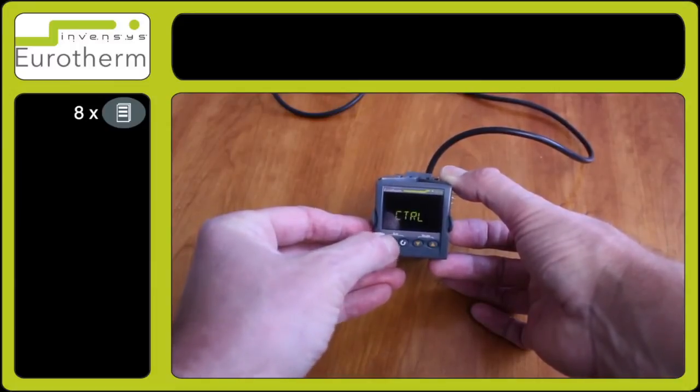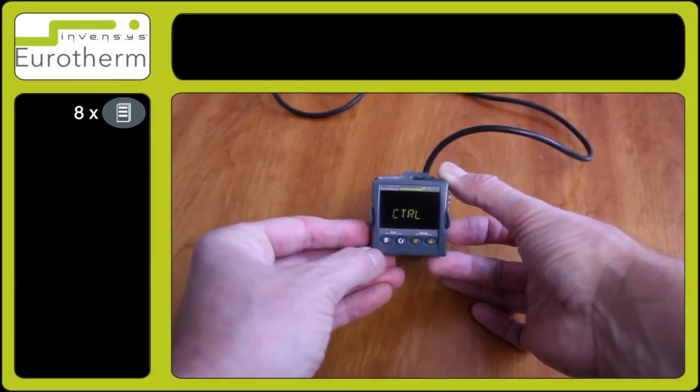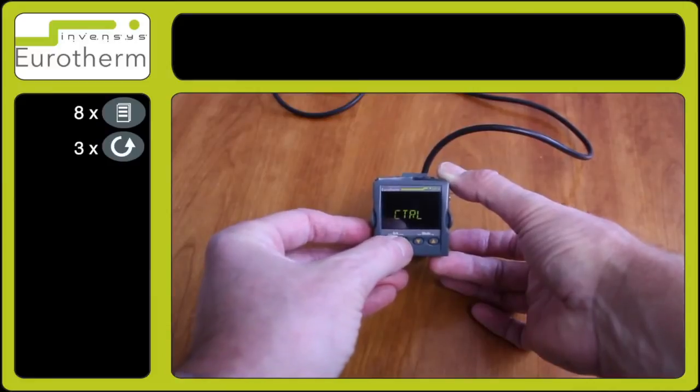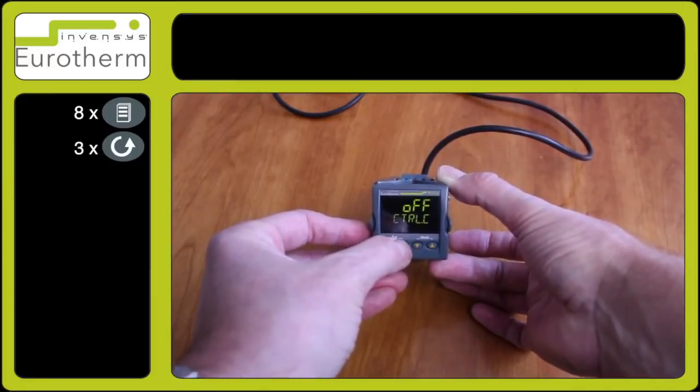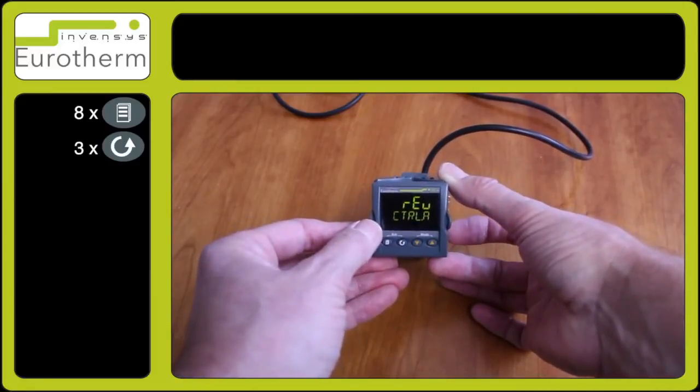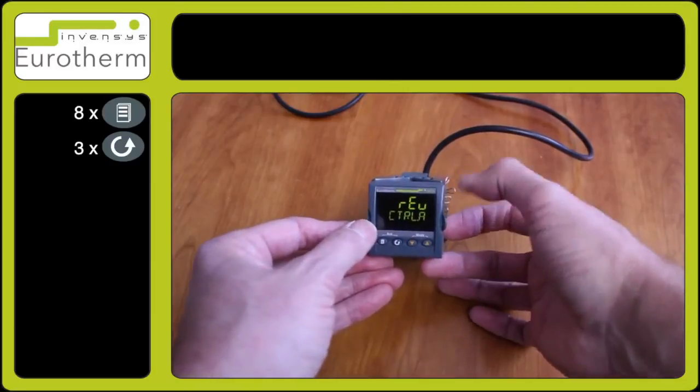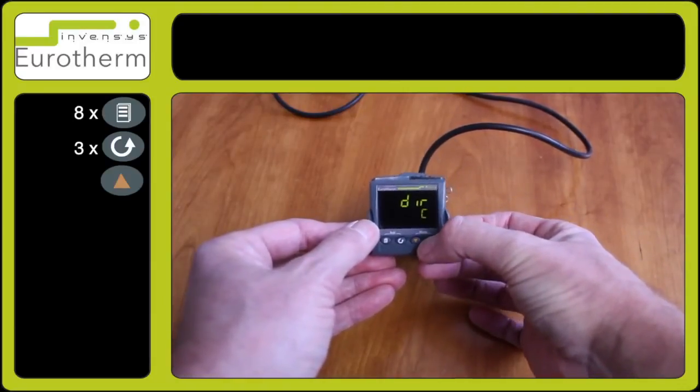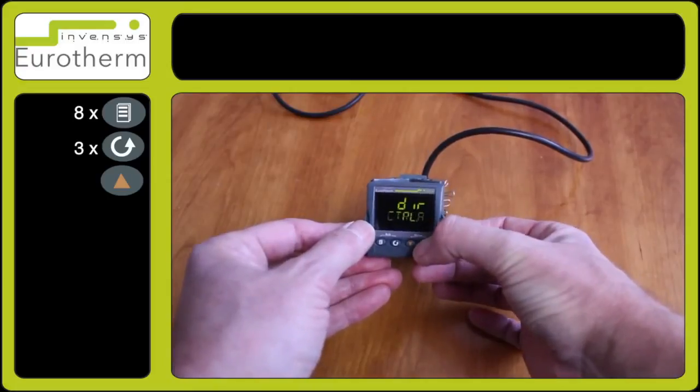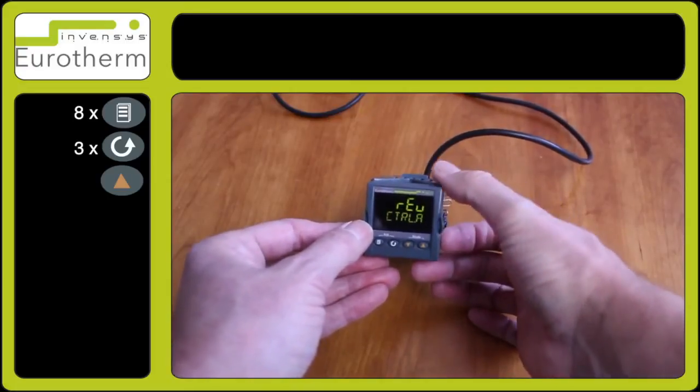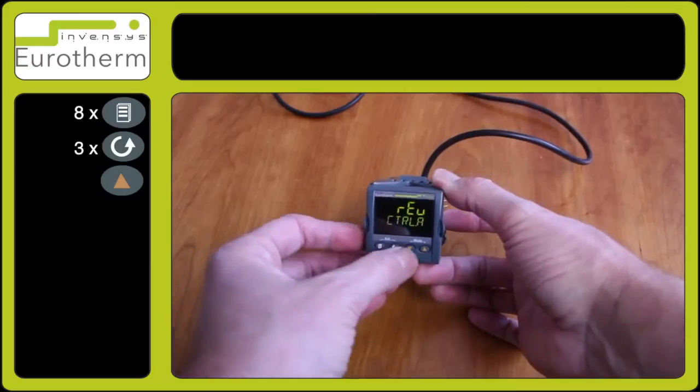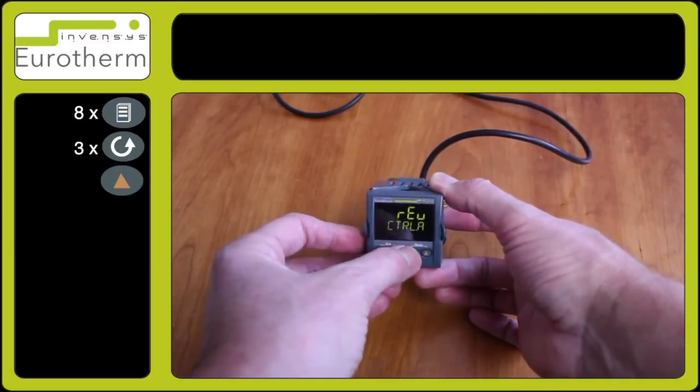Press the scroll key a few times for CTRL.A, and you can change this here for direct or reverse acting. This time I will change it to direct acting.